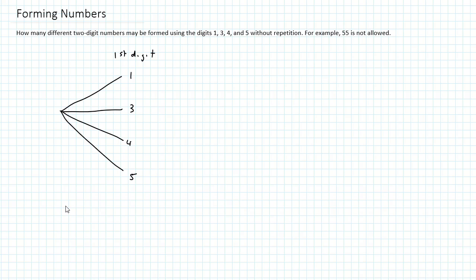Now for the second digit, what are the possibilities? Well, if the first digit was a 1, then the second digit has to be either 3, 4, or 5. Can't be 1 because we're not allowed to repeat.